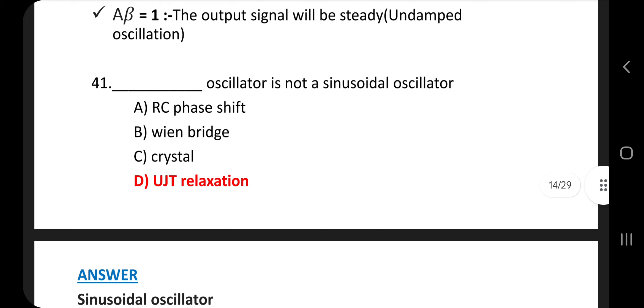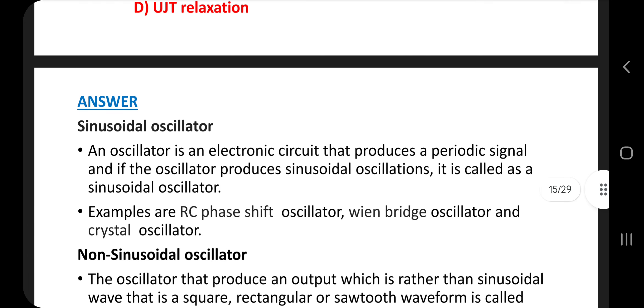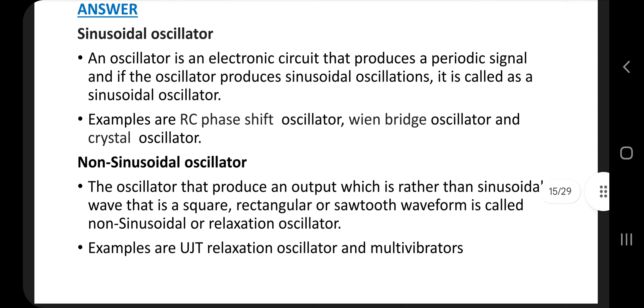Question number 41. Dash oscillator is not a sinusoidal oscillator. Answer is option D, UJT relaxation oscillator. What is sinusoidal oscillator? An oscillator is an electronic circuit that produces a periodic signal. If the oscillator produces sinusoidal oscillations, it is called a sinusoidal oscillator. Examples are RC phase shift oscillator, Wien bridge oscillator, and crystal oscillator.